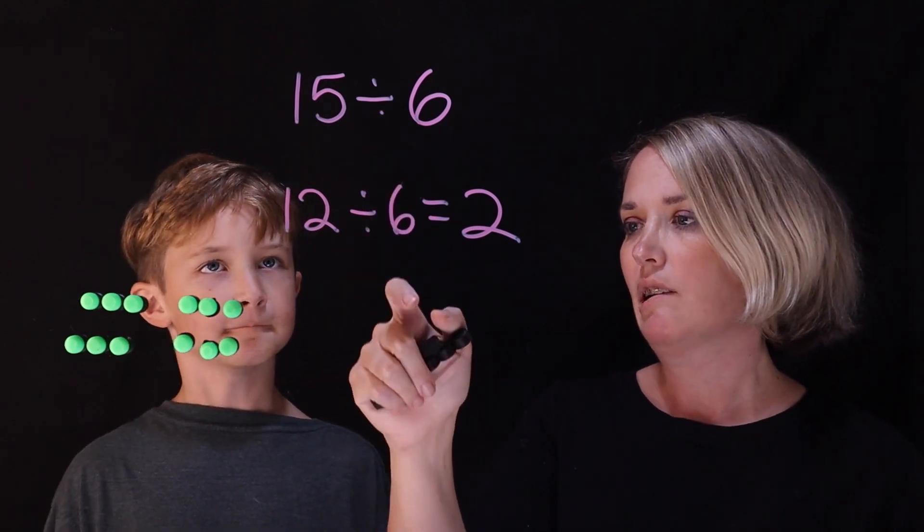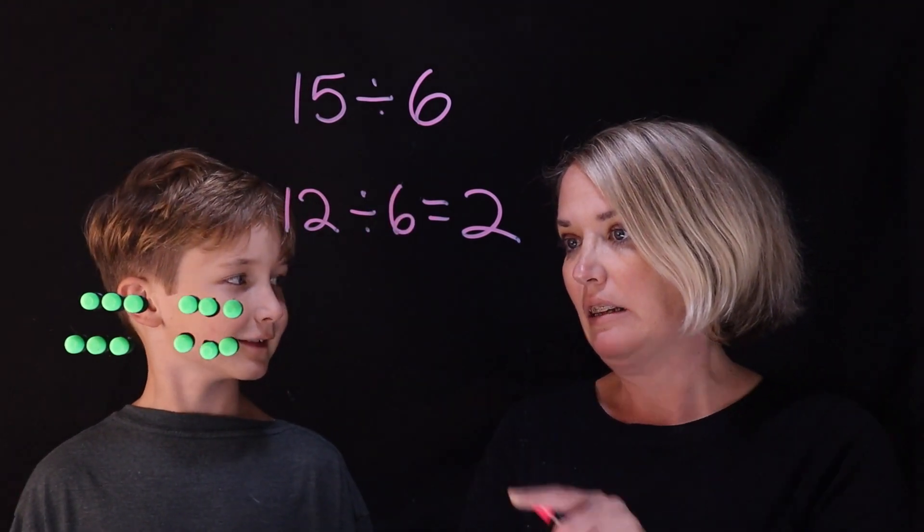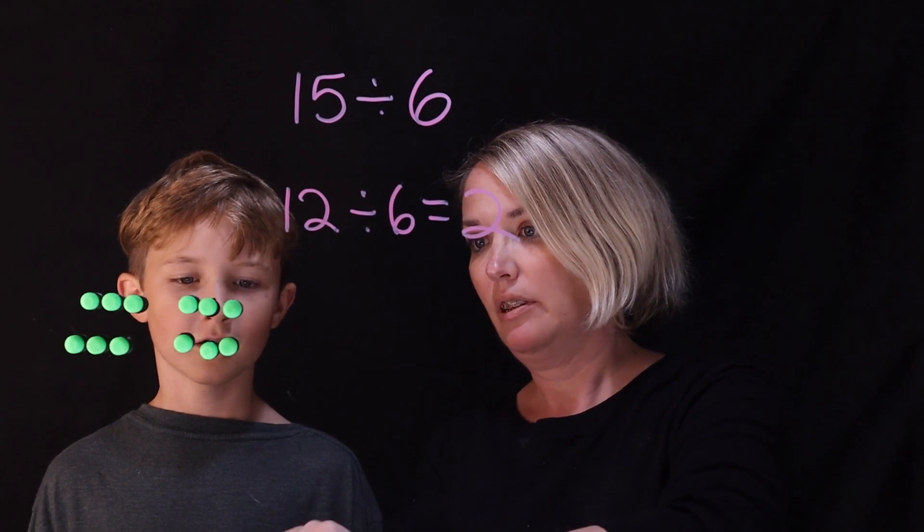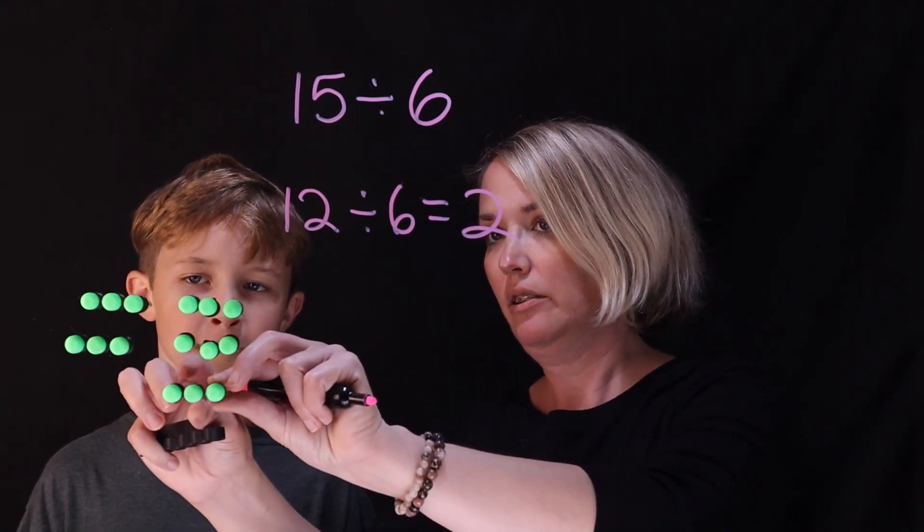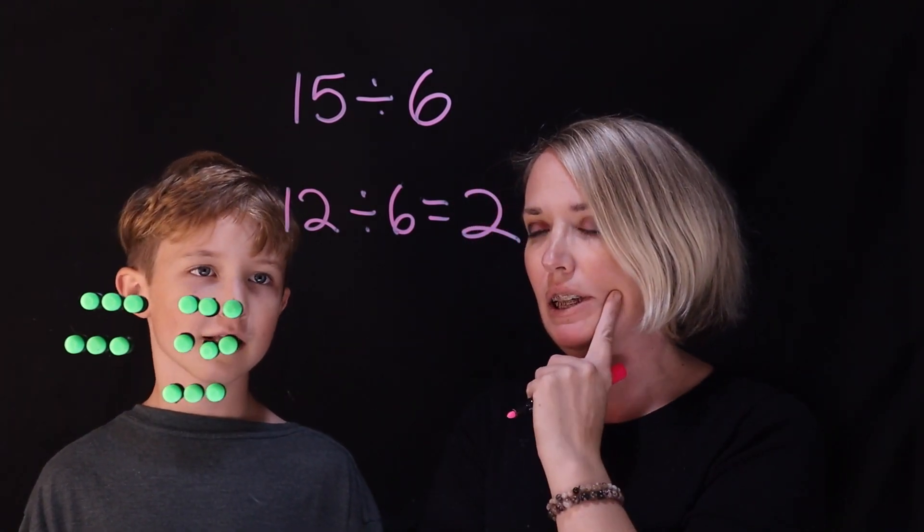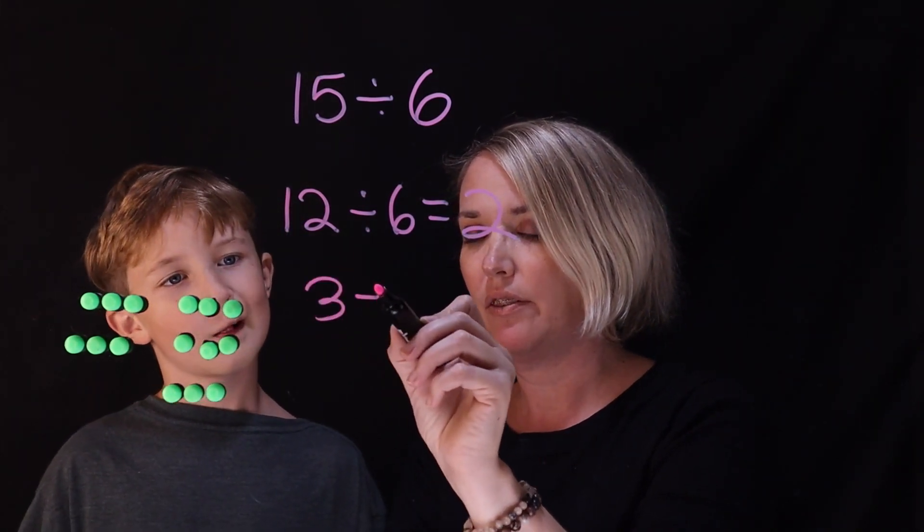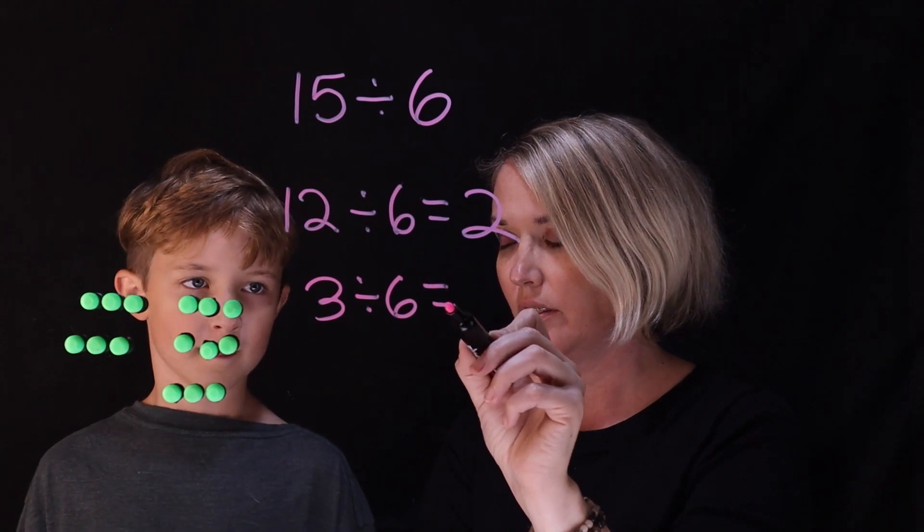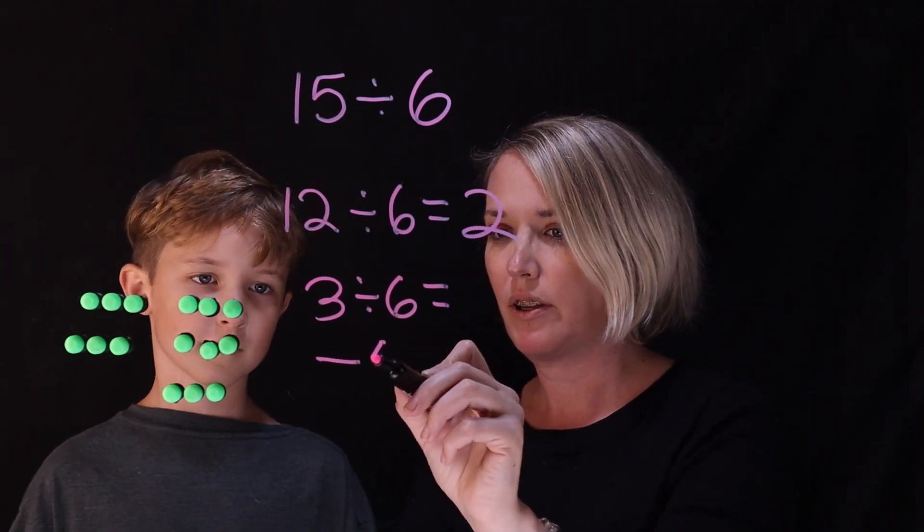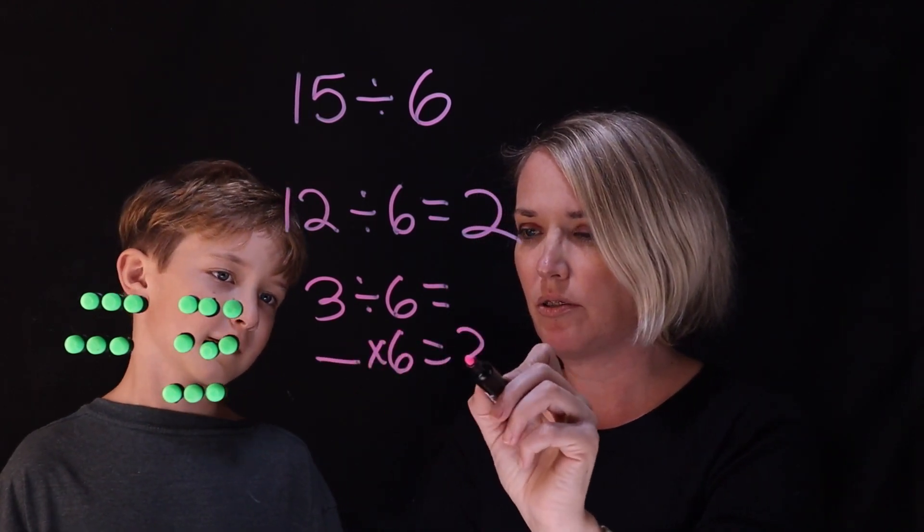But we actually need to do 15. Yeah, and there's only 2 folders. So we sort of, like, move back there, too, right? Yeah. Okay, so we've got to figure out what either 3 divided by 6 is or what times 6 would equal 3.